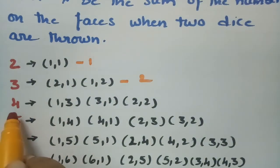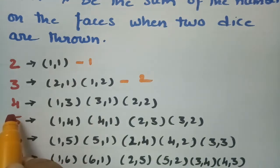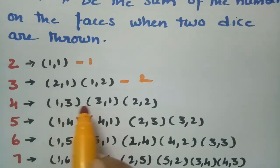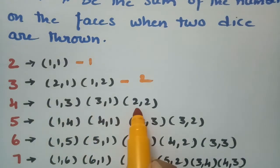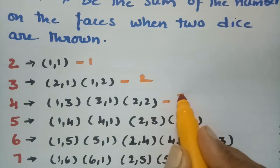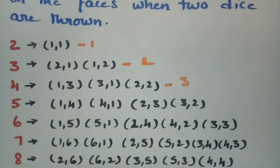For getting four on the face when two dice are thrown, the sum of the numbers on the faces is four. The chances here are (1,3), (3,1), and (2,2) — they are three chances.